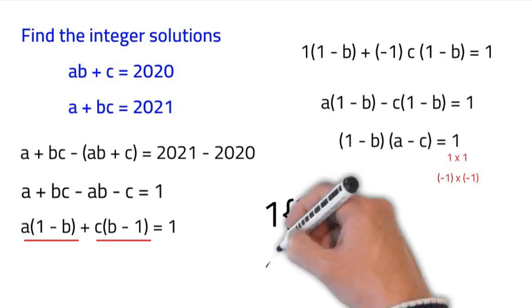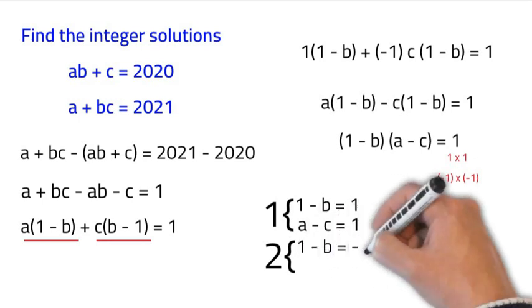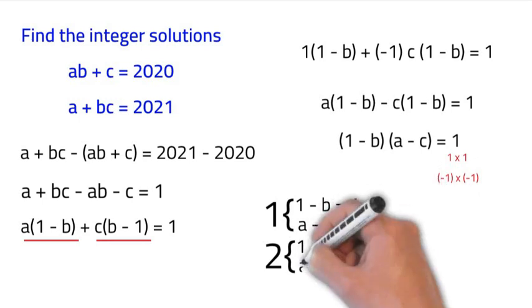And then if we do the other side the same way, our second case, we'll have 1 minus B is equal to negative 1, and A minus C is equal to negative 1. Which, a negative 1 times a negative 1 is also equal to 1.